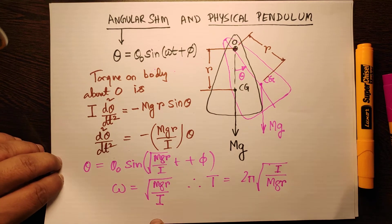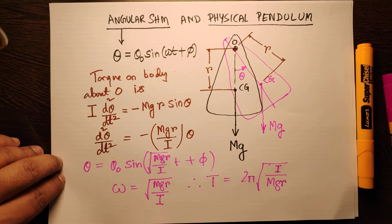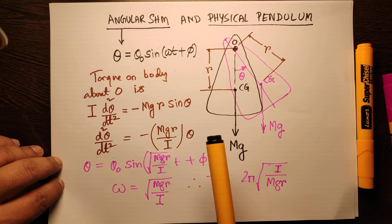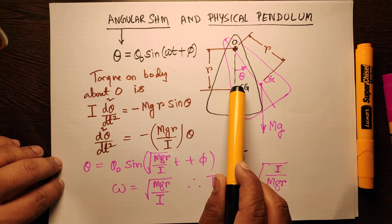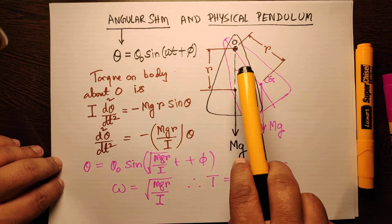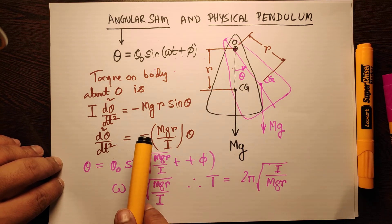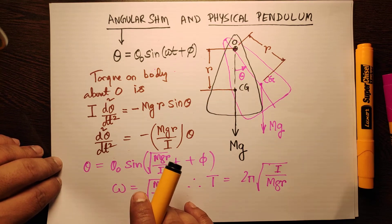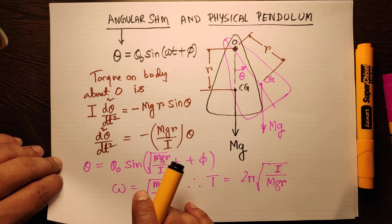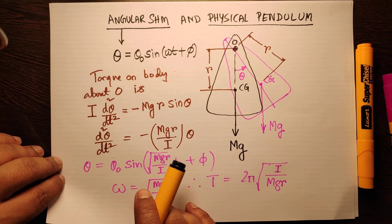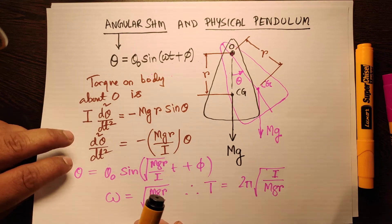The maximum time period would be infinite. Why? If the hinge point O is at the center of gravity itself, and you give it a displacement θ, there will be no torque, so it will not oscillate at all — making the time period infinite.